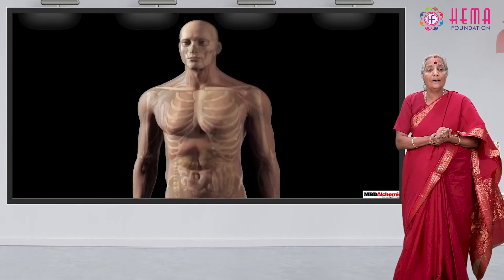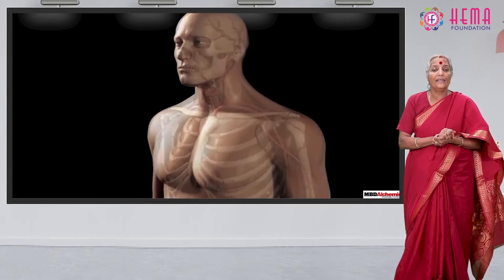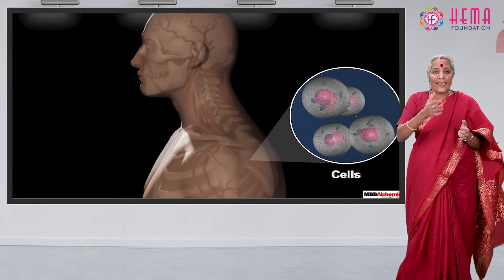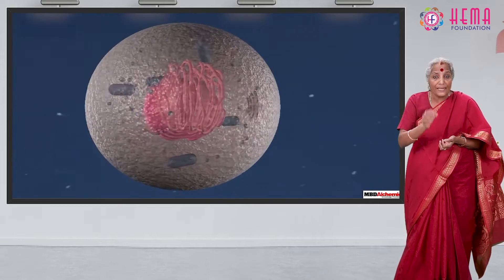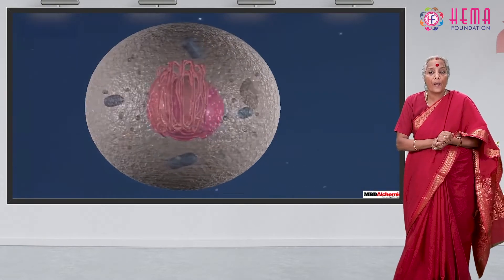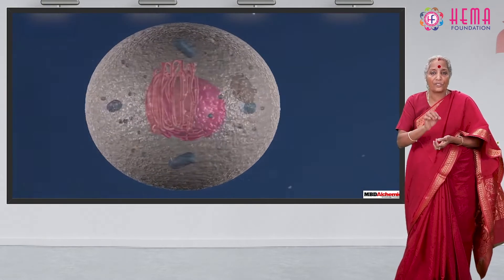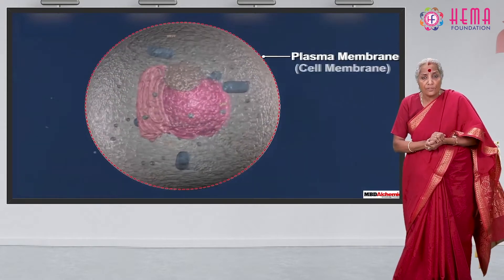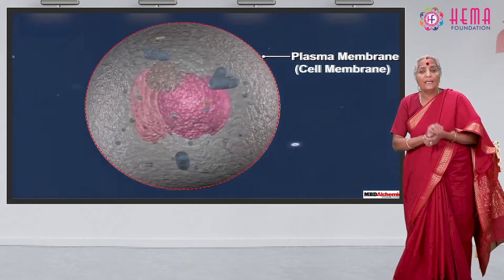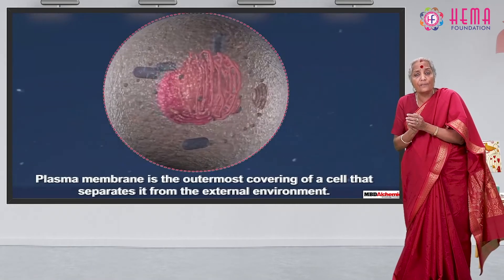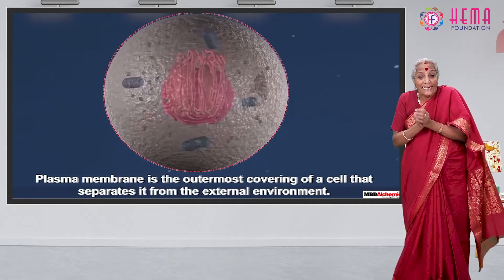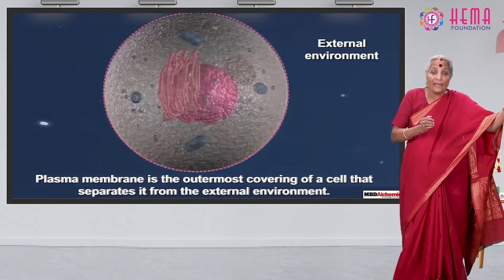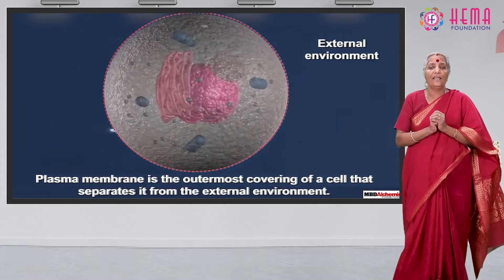A cell wall is defined as a rigid external layer that is specifically designed to provide structural support and rigidity. It also keeps the interior components of the cell intact and safe from the external environment.